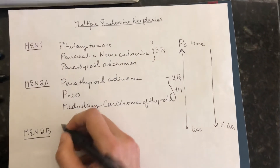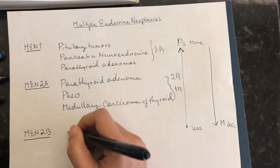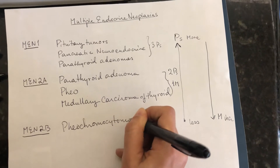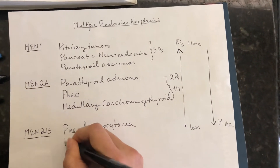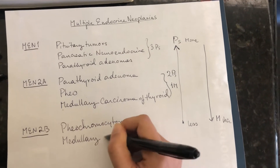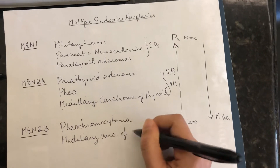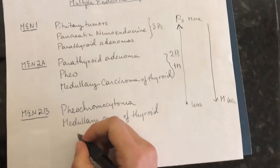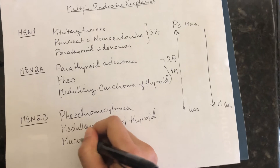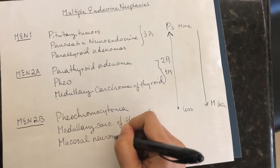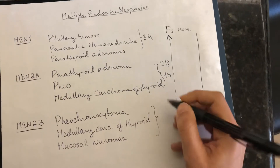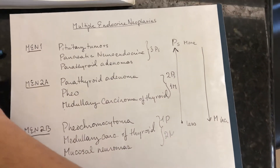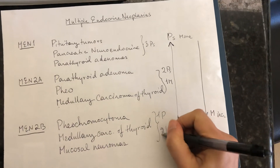Then for MEN 2B, we decrease our P's by one and increase our M's by one. So here we have just one P — the pheochromocytoma — and then we also have medullary carcinoma and mucosal neuromas, giving us one P and two M's.